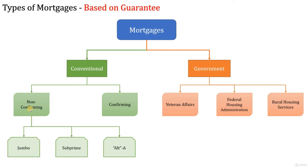Non-conforming loans are not eligible for purchase by government-sponsored entities like Freddie Mac and Fannie Mae, but can be sold in the secondary market as whole loans or can be pooled, securitized, and sold as private label mortgage-backed securities. Non-conforming loans comprise jumbo loans, subprime loans, and Alt-A loans. An Alt-A mortgage loan is provided to borrowers who have good job stability and good income, but whose credit scores don't fit the A-credit guidelines. This could be due to a short credit history or a slight derogatory hit on the credit score, such as a 30-day late payment.